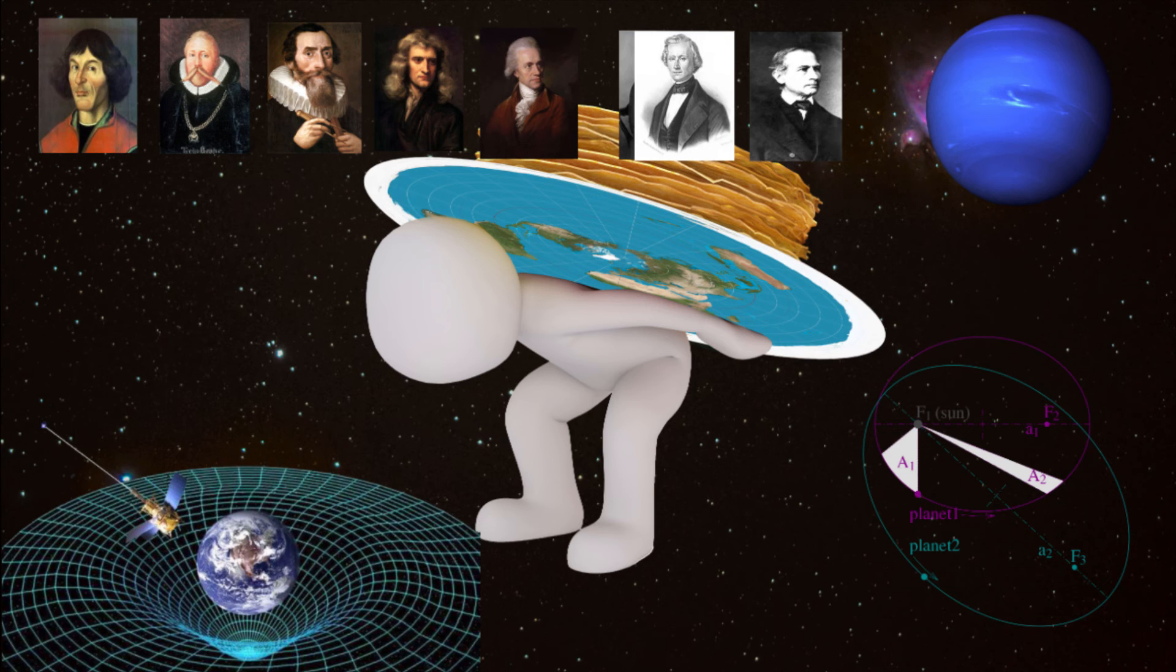Math from the real observations of the real world. Observations identified heliocentrism, math described the motions, gravity explained the fabric, and science—not religion or ignorant denial—discovered the planet of Neptune. Gravity is real. We can observe it, we can measure it. It is not just a theory, it's the law.